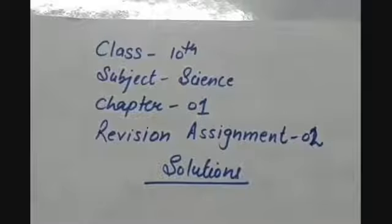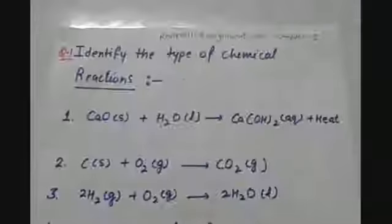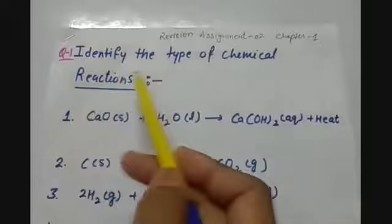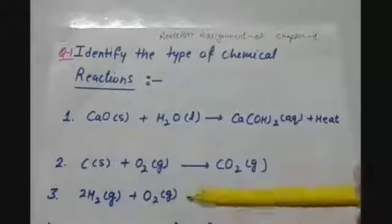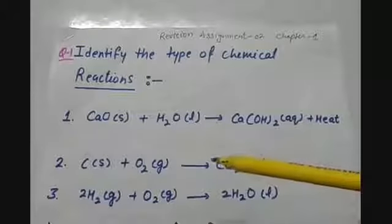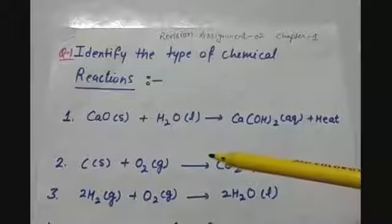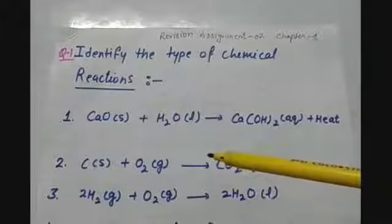Welcome back dear students. This video is for Class 10 Science Chapter 1, that is Chemical Reactions and Equations, and this is revision assignment number 2 solution video. The first question asks us to identify the type of chemical reactions. We were given 14 equations to identify. In this video, we will only be doing the questions which seem a little tough or which need clarification. Rest of the questions are easy and you can do them by yourself.